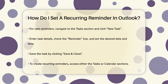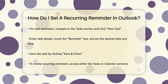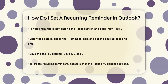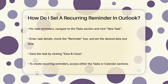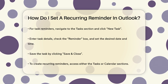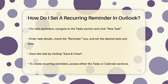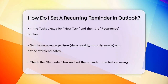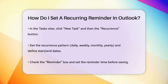For recurring reminders, you can set them up through the Tasks or Calendar sections. Let's start with Tasks. Open Outlook, go to the Tasks view, and click New Task. Enter the task details, then click the Recurrence button in the Task tab. In the Task Recurrence dialog box, set the recurrence pattern—daily, weekly, monthly, or yearly—and specify the start and end dates if needed. Check the Reminder box and set the date and time for the reminder. Click Save and Close to save the task.